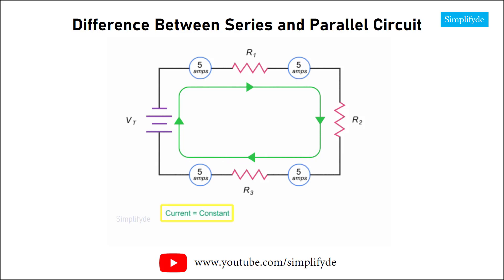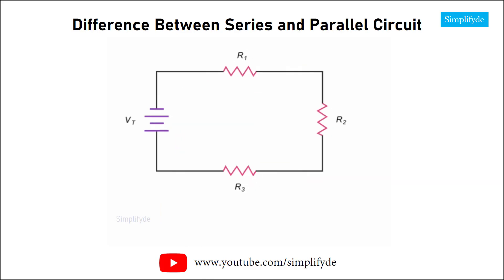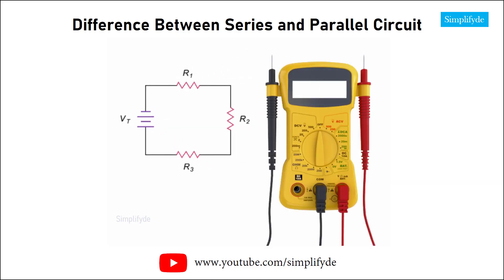Although current is constant throughout a series circuit, voltage is not. Voltage in a series circuit is divided across the load resistors so that the sum of the individual voltages equals the total voltage applied. This relationship is known as Kirchhoff's Law.